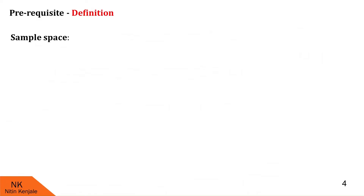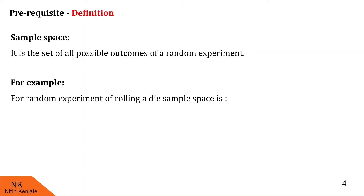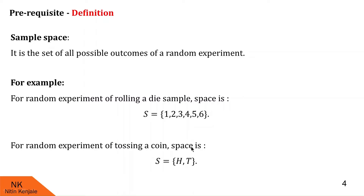The next term is sample space. Sample space is the set of all possible outcomes of the random experiment. For example, when we roll a die, the corresponding sample space consists of numbers 1, 2, 3, 4, 5, and 6. Similarly, in the experiment of tossing a coin, the sample space is {H, T}, where H stands for head and T stands for tail.